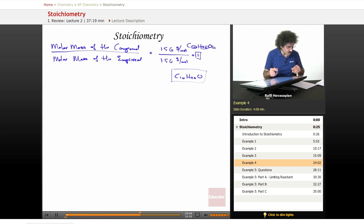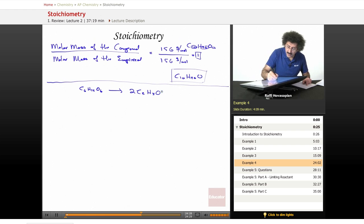So let's do a stoichiometric calculation based on an equation. The fermentation of glucose produces ethyl alcohol and carbon dioxide according to the following equation: C6H12O6, in fermentation, goes to 2C2H5OH plus 2CO2.